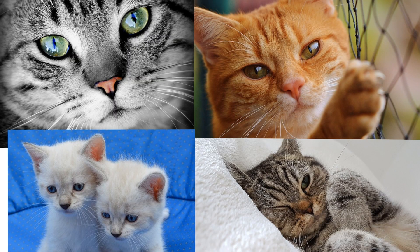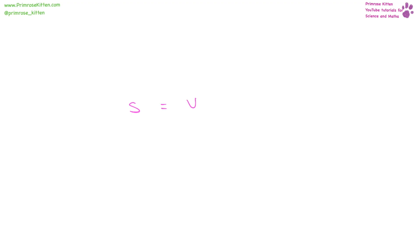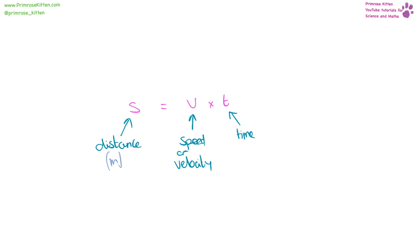There is a lot of maths in this topic, and to give your brain a little break, here are some cute kittens for you to look at. Distance equals speed times time. Distance is measured in metres, speed or velocity in metres per second, and time in seconds.